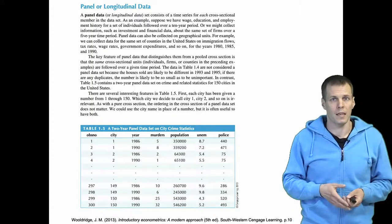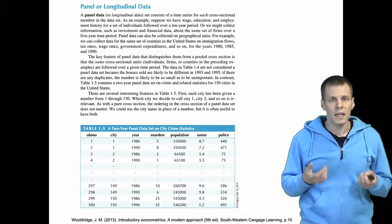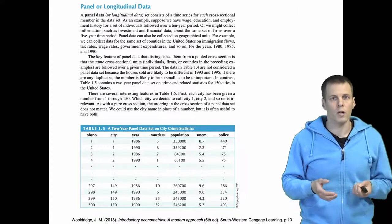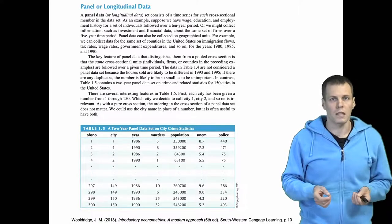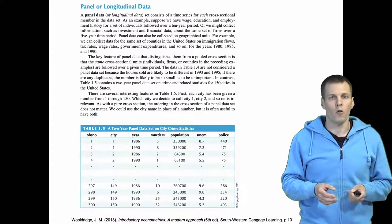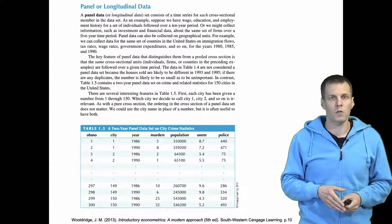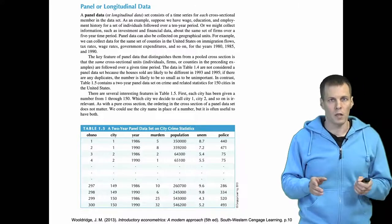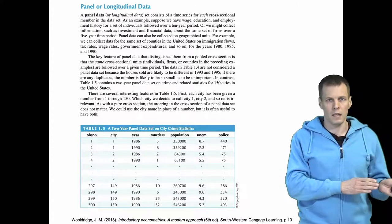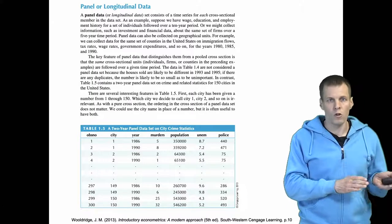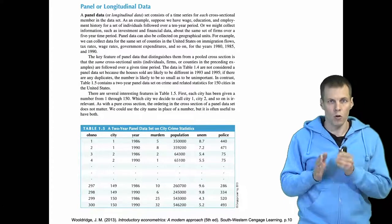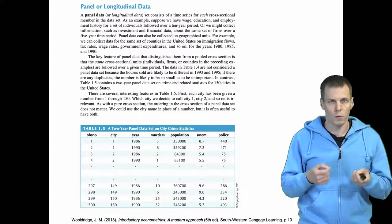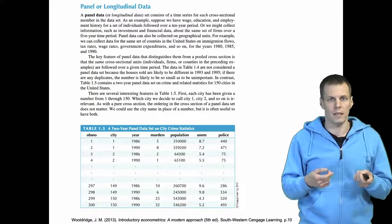So this is a panel data set, and this kind of data sets are longitudinal because we have repeated observations that can be indexed on two different values. First we have the city ID, and then we have a time index. Importantly, whereas the city ID does not really have an order, the time variable is an ordered variable and that's what makes this kind of data sets special.